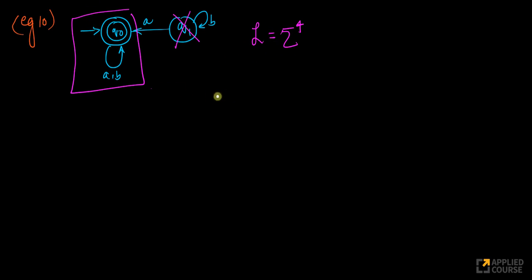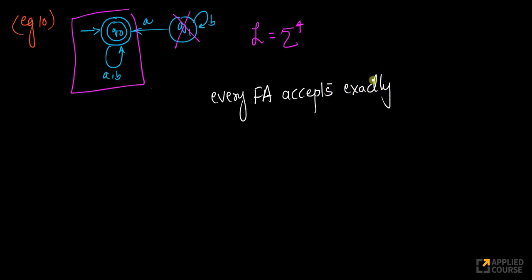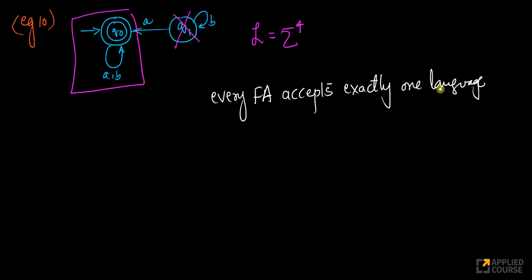The key aspect here is: every finite automaton accepts exactly one language. We can exactly define the language accepted by any finite automaton — it could be anything from the empty set, to a set containing only the empty string, to the universal language sigma star.